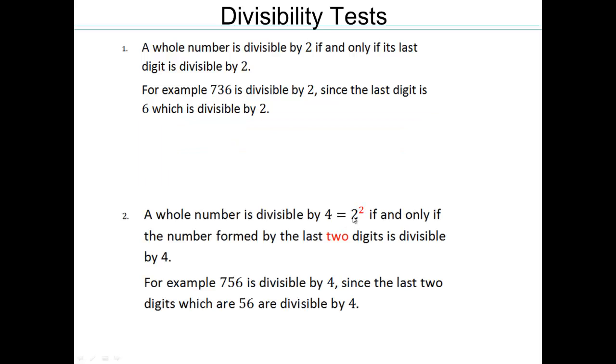4 is 2 squared, and we know that 4 goes into 100. So starting with the hundredths place and higher place, 4 is a factor of each one of those. And therefore, if you looked at the last two digits, and 4 divides those last two digits, then 4 divides the entire number. So for example, 756, 4 divides 56, and so that means 756 is divisible by 4.